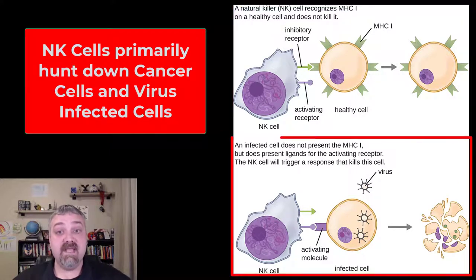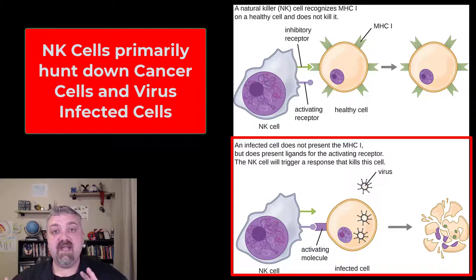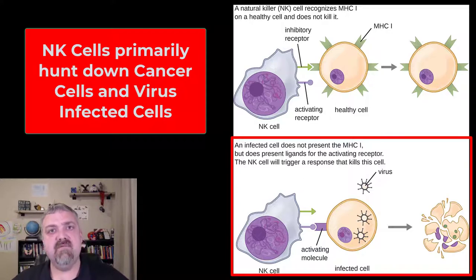When it bumps into a cell that's either infected with a virus, maybe an intracellular bacterial pathogen, or a cancerous cell, it's going to see distress signals on the surface — mainly by what those cells get rid of. They get rid of these MHC complexes, so the natural killer cell doesn't know exactly what's wrong. That's why it's part of the non-specific defenses.